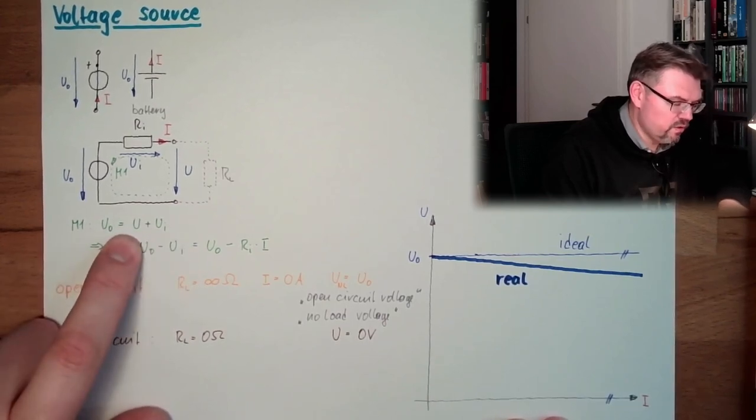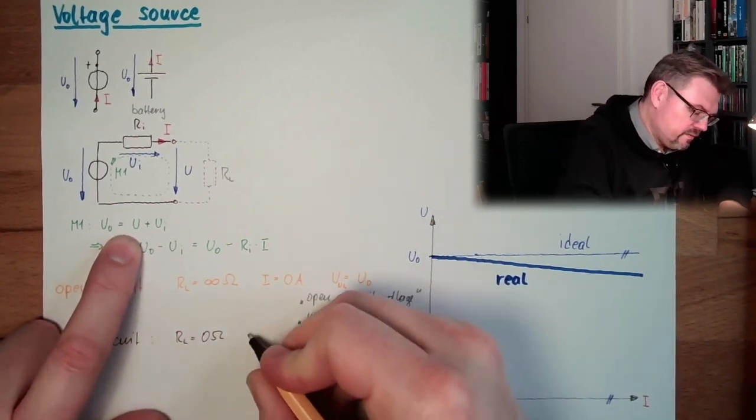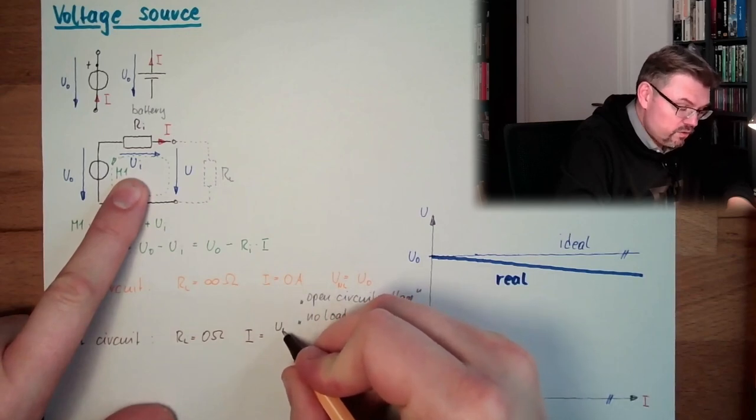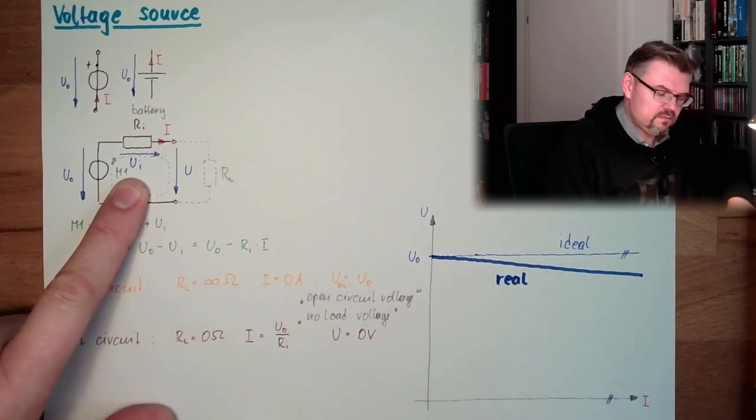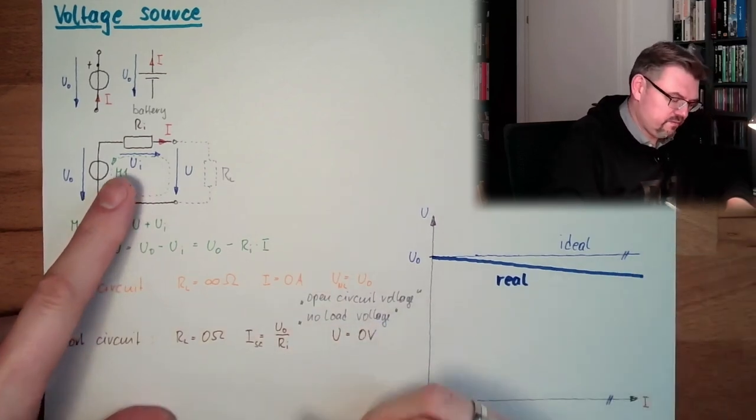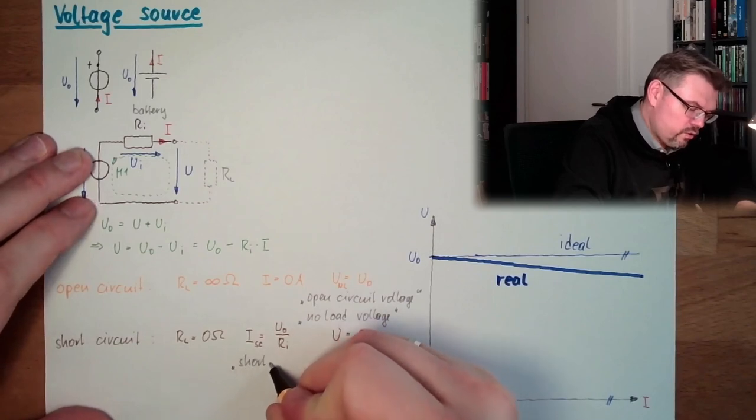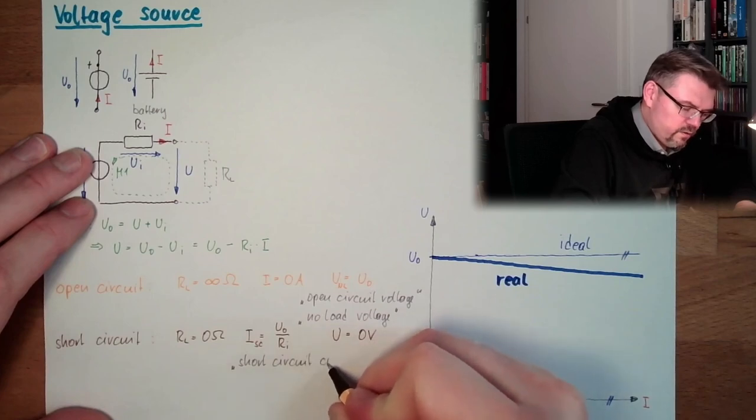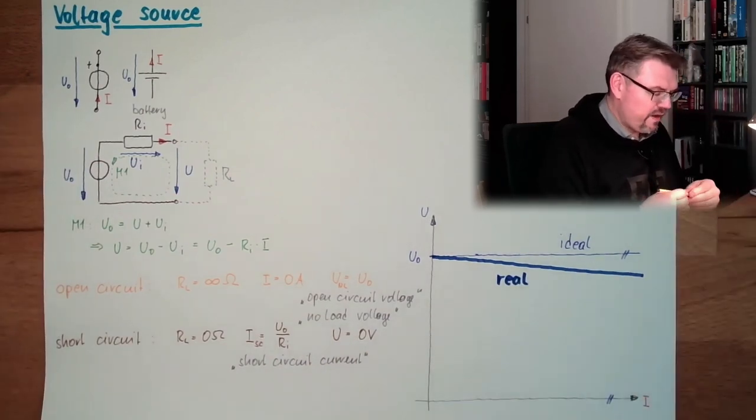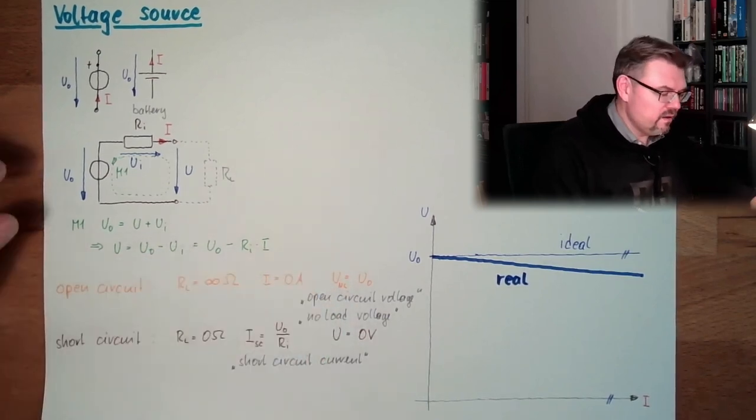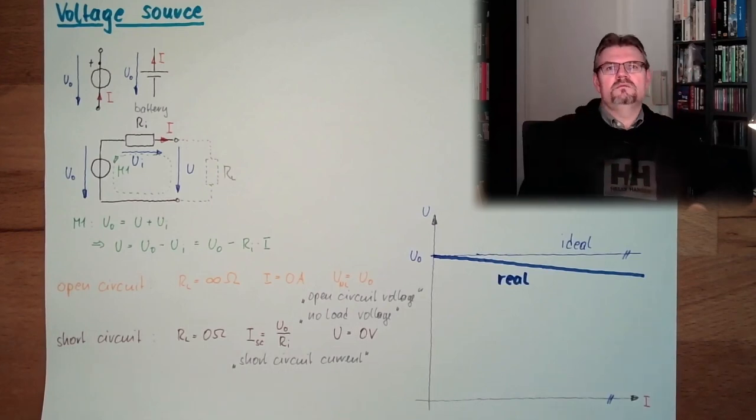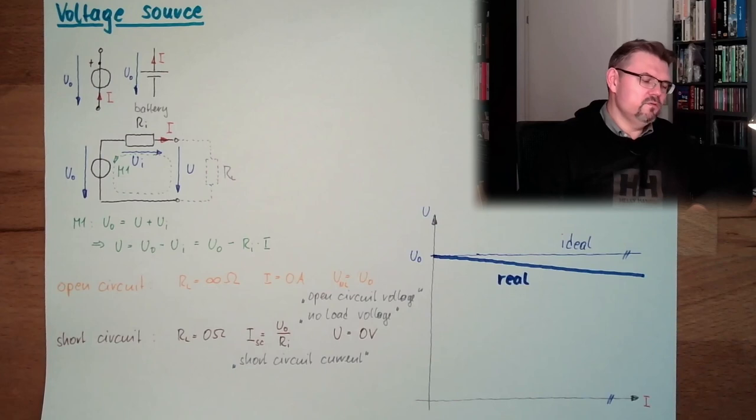What would it mean for Ui? Ui is, if we have this U is zero, and Ui and U must be the same. U is zero and Ui must be the same, because U is zero. So this means for our current I, we have here Ui, which is U0, divided by Ri. This is the current, and this is the short circuit, short circuit current. So, if you do have an open circuit, you can determine the source voltage. If you do have a short circuit, you can determine Ri. And now, what would be ideal?